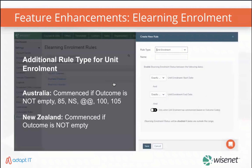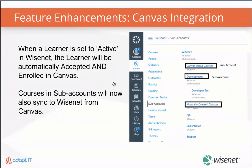If you use our e-learning integration, you can now choose whether you want unit enrollment rules to only be applicable when a unit enrollment has an outcome. It'll enroll a learner into Moodle or Canvas only if the outcome is not empty for New Zealand. The learner will no longer need to manually decline or accept their enrollment in Canvas. When a learner is set to active in Wisenit, the learner will be automatically accepted and enrolled in Canvas.